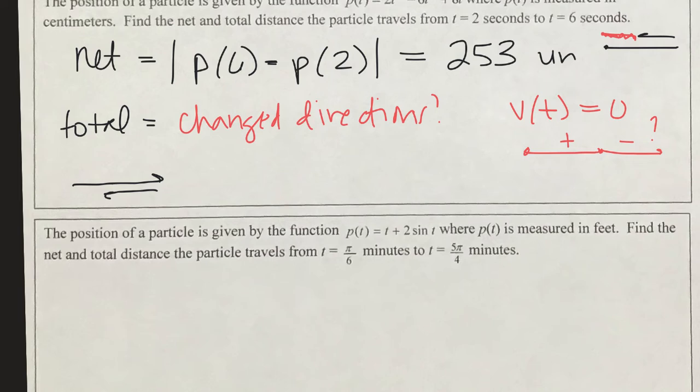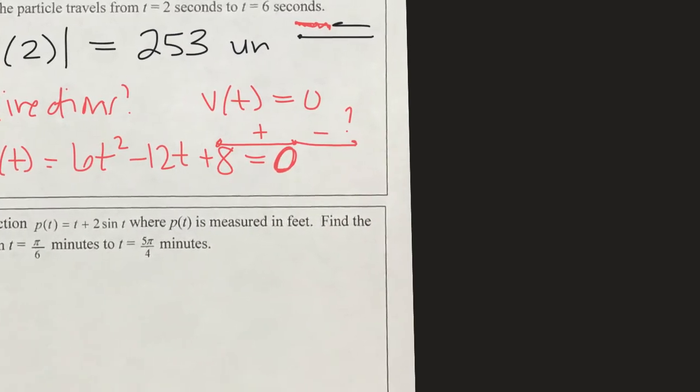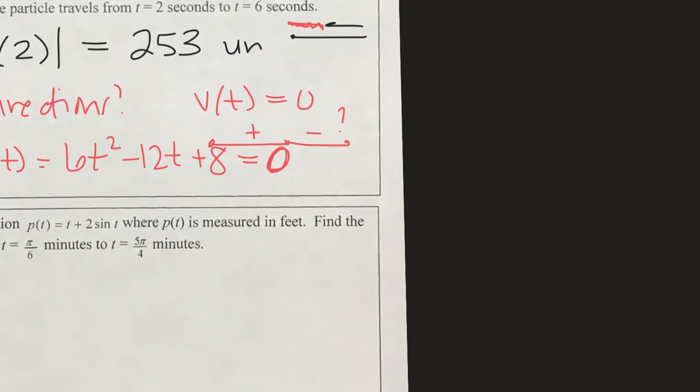We're going to take the velocity with respect to time, which is the derivative of your position function: 6t² - 12t + 8, and we want to see when that equals 0. So let me go back—you probably didn't write it down fast enough. I can divide everything by 2 right now and get 3t² - 6t + 4 = 0.